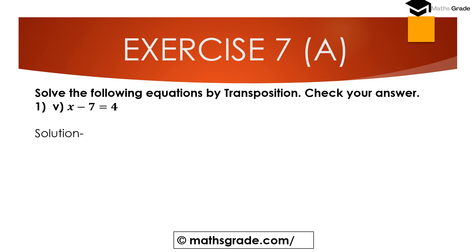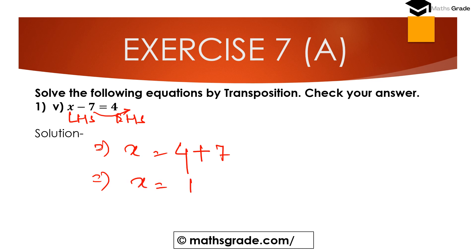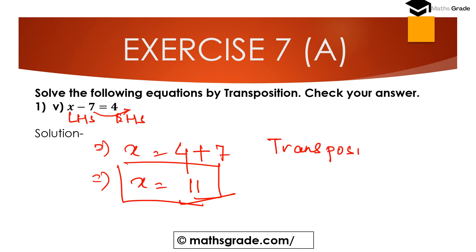Question number five: x minus 7 equal to 4. Here x minus 7 is on the left-hand side and 4 is on the right-hand side. Transposing minus 7 to the right-hand side, minus changes to plus. So x equals 4 plus 7, which is 11. The solution is x equal to 11.